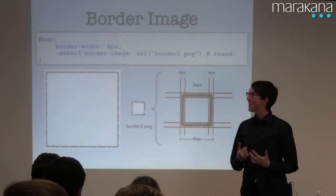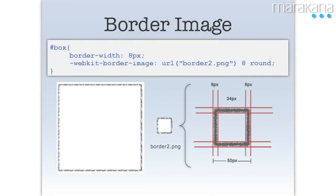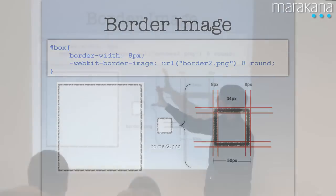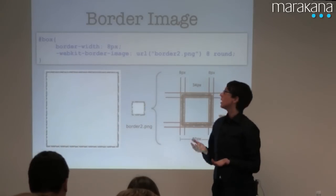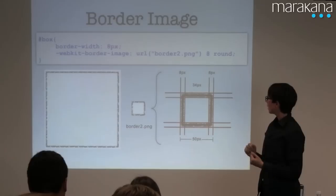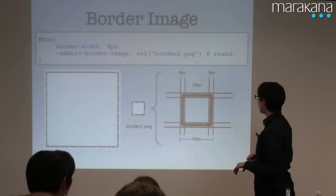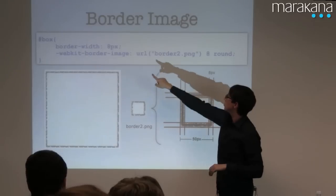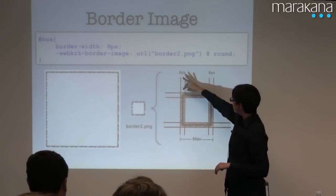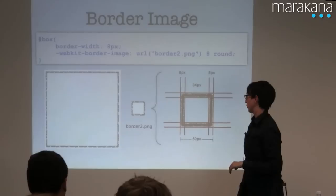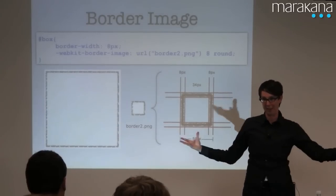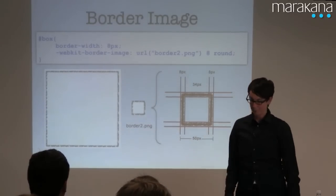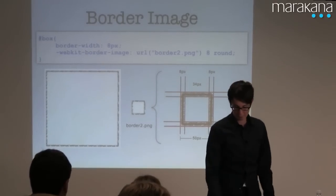Even wackier is border-image. What this does is take an image — generally a square, but it doesn't have to be — and maps it onto a box and uses it as a border. There are several options for how it does that, but basically you're doing the slicing by saying the width is 8 pixels, meaning this area of your image is what you'll use as the border. It gets more complex from there, but that's the basics — then you give it the name of the image and so forth.